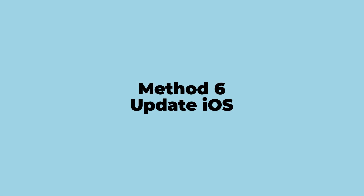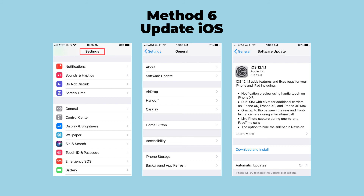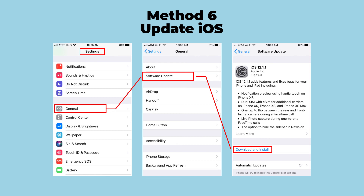Method 6: Update iOS. If your iOS device is outdated, it may cause many errors on iPhone, so you need to update your iOS device. Just go to Settings, General, Software Update. When your iPhone is updated, go and check if the flash works.